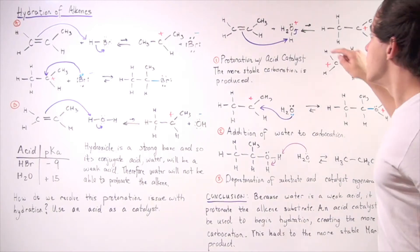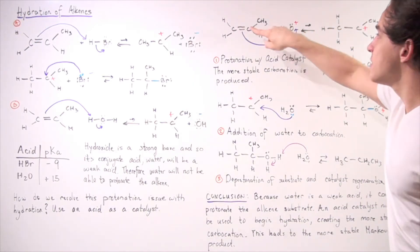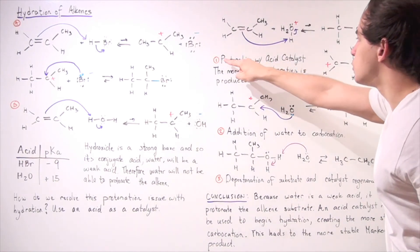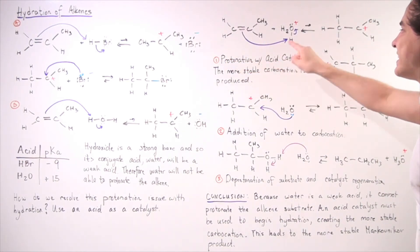And now hydronium has a positive charge and that means it will donate this H-ion readily, forming the following carbocation. Now, once again, this H can be captured onto this carbon or this carbon. Remember, we want to form the more stable secondary carbocation and not the less stable primary. So this will not be formed, but this will be formed. So this is known as the protonation with acid catalyst. So the more stable carbocation is produced in this step.